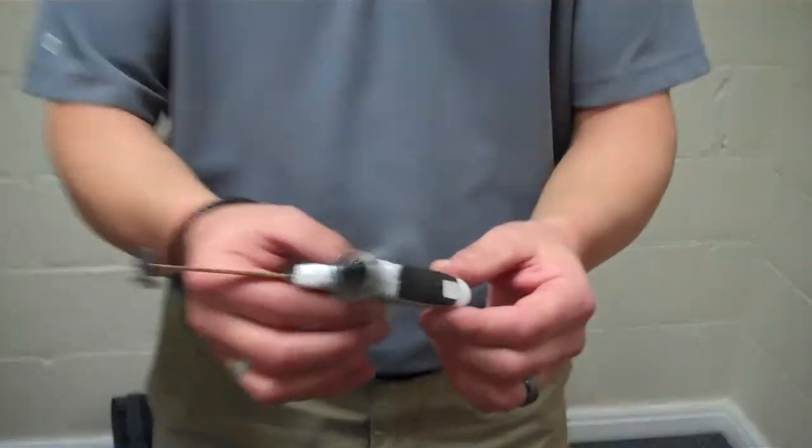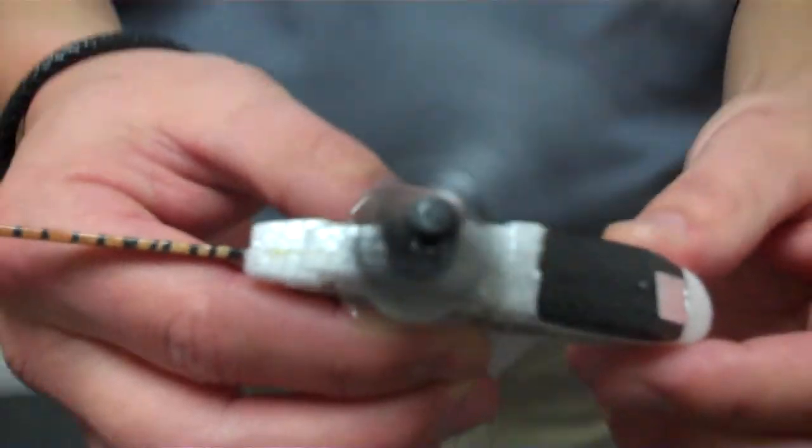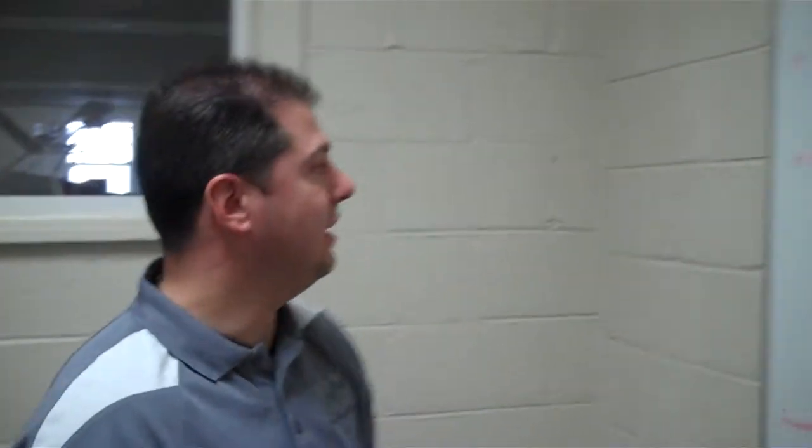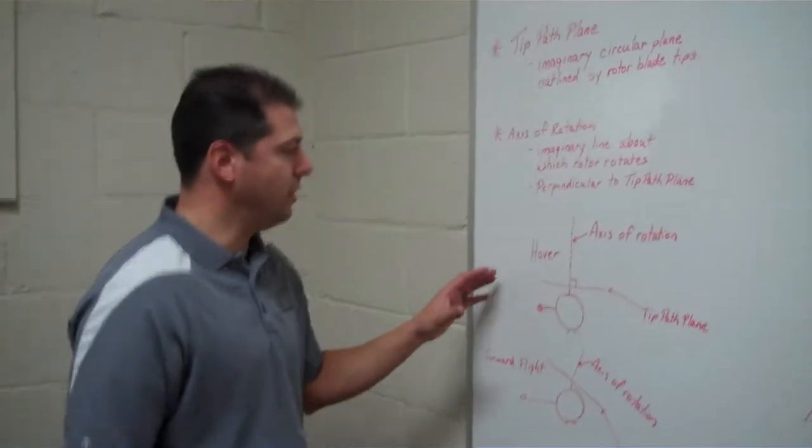I'm not sure if you can see that. Okay, so you're able to see that it created a plane going around. That's what a tip path plane looks like. Now there are a couple of diagrams that we have here.